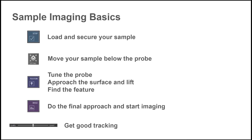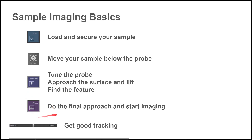Now that the probe is installed and the laser is aligned, you can start making the measurement. First, load your sample, securing it either with the stage vacuum or the magnetic sample holder. Then move the stage until the sample is below the scan head, and make sure the probe is above the sample. Once you hit the position button, the probe will approach your sample — if you are not above your sample, you risk damage to the tool. Hit the position button to tune the probe and approach the surface. After the approach, the scan head will lift and you can find the feature you want to image, with the tip 100 microns above the sample. The next step is to actually image the sample surface, where the final approach is performed and the tip generally ends a few nanometers above the sample.